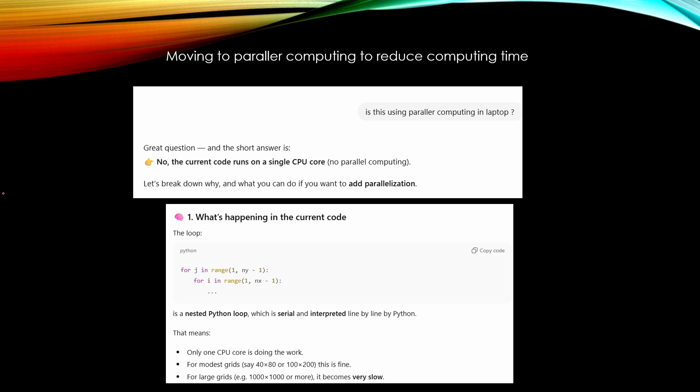At the beginning one big problem was that those calculation times were very long. And I was asking ChatGPT is this code using parallel computing in laptop. And it was telling that it is not used. It is running on a single CPU. So remember always when you develop this kind of code that you need to ask for parallel computing code.